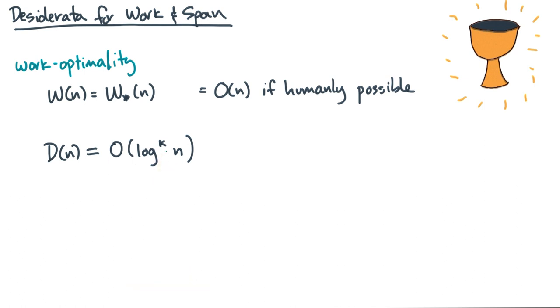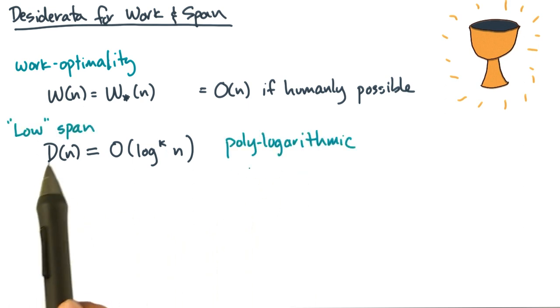So that might be log n, log squared n, log cubed n, and so on. Always remember this principle of polylogarithmic span. That's what we'll mean when we say low span.